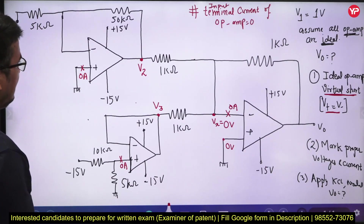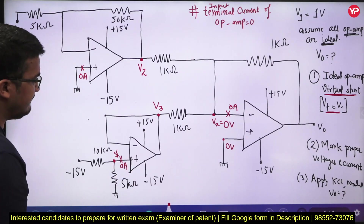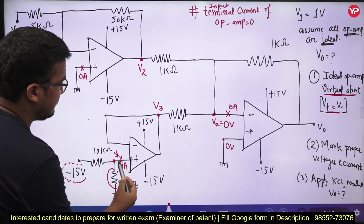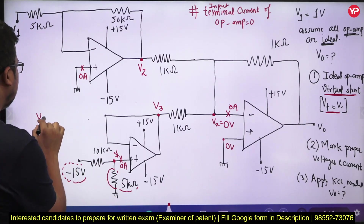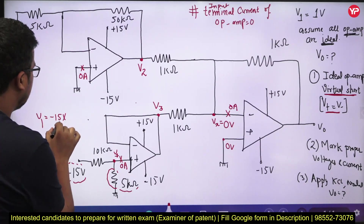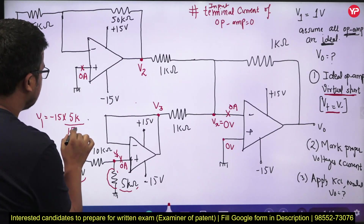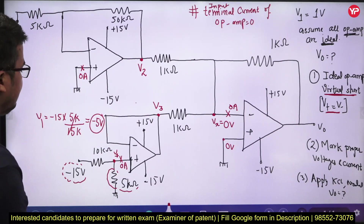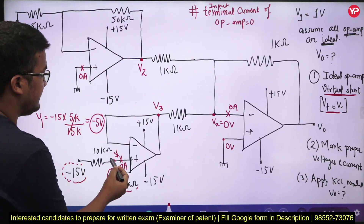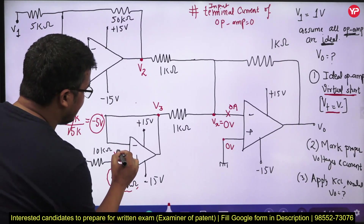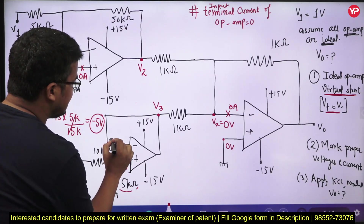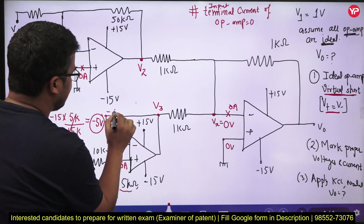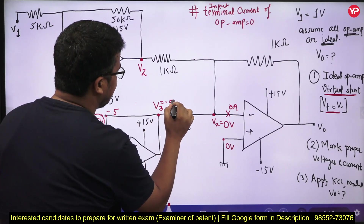Now can I calculate this voltage? Let us say this is the V1 voltage. What will V1 voltage be? Since no current is flowing here, we can consider this as a series network. V1 will be equal to minus 15 into 5k upon 15k, which gives minus 5 volt. So V1 equals minus 5. Since V1+ is the voltage at the non-inverting terminal, V− will be equal to V1+, meaning this voltage itself will be equal to minus 5 volt. I got the voltage here.